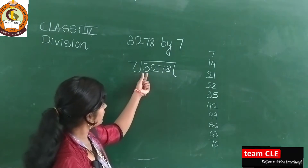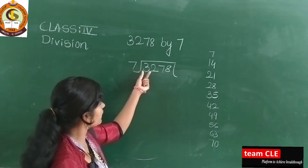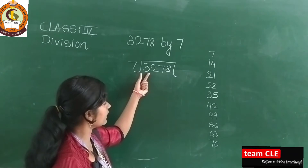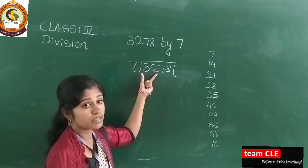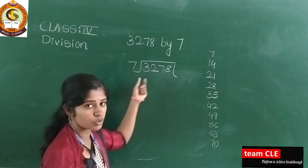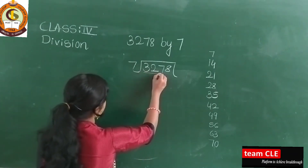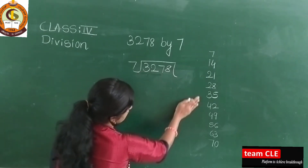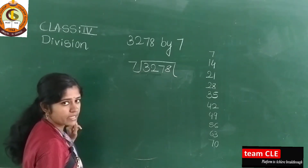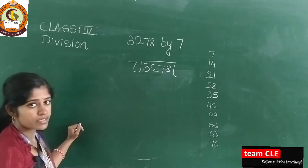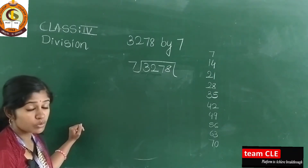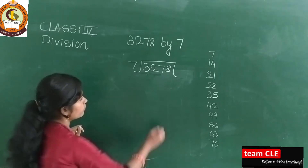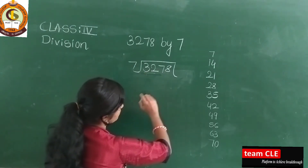See here — the first digit is 3. Now 7 is bigger than 3, and 3 is not in the 7 times table, so I can't take just 3. I need to take 32. Why not just 3? Because 3 is less than 7, so I need a greater number to divide.